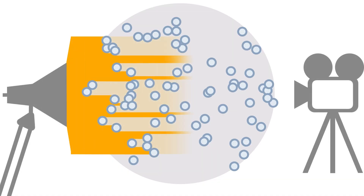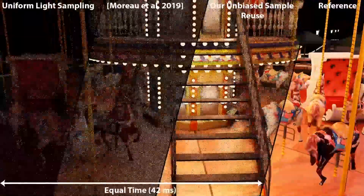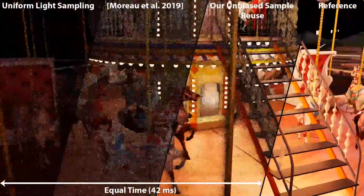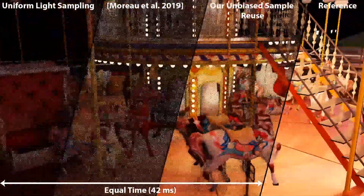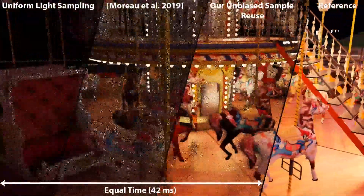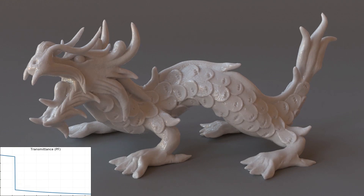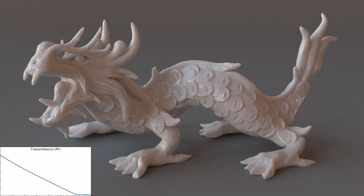I work on computer graphics, specifically in an area called rendering, where you try to simulate how light bounces around in the real world to create photorealistic images. I apply computer graphics to a number of different problems. The most obvious ones that people think of are the animated films you see, special effects. All those images that you see are created on a computer. To make them look photorealistic, you need to simulate how light bounces around.